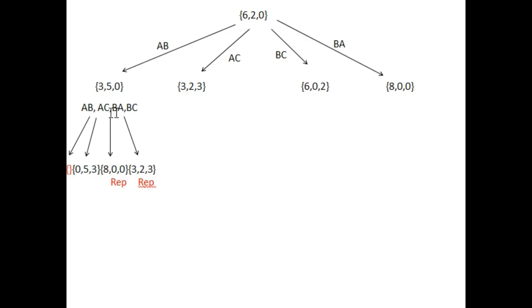The remaining two actions CA and CB cannot be applied on this state because jug C is empty. I have marked these as 'REP' — these are repeating states that have already been generated.